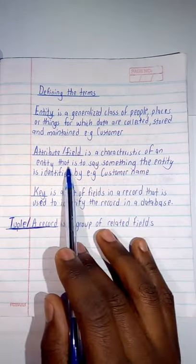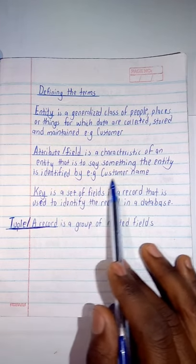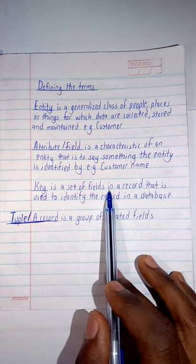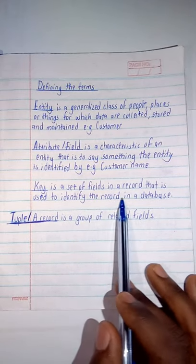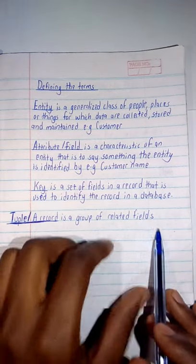Then we're having the attribute or field, which is a characteristic of an entity - something the entity is identified by, for example customer name. Then I'm having a key - a key is a set of fields in a record that is used to identify the record in a database. Then I'm having a tuple or record, which is a group of related fields.